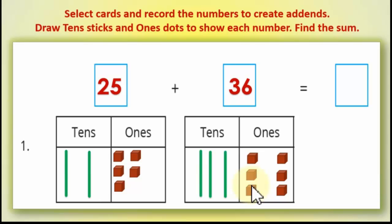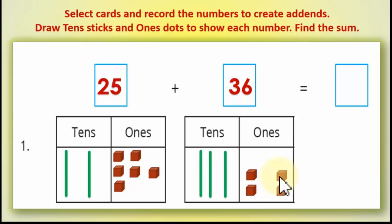وعندنا 2 في الـtens و3 في الـtens هنضيفهم على بعض. علشان يكون سهل، بنكون من الـones: الـ5 دي محتاجة كمان 5 عشان تبقى 10 — آخدهم من الـ6. هيفضل 1 في الـones هنا، والـ5 دول هيتنقلوا ويروحوا عند الـ5 التانيين عشان يكونوا 1 ten. فضل عندي 1 في الـones، واتكونت عندي 10 ones = 1 ten.